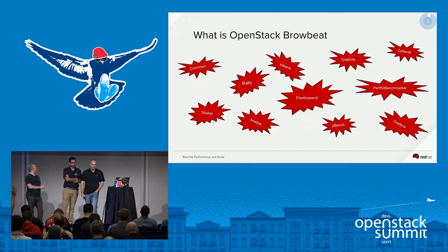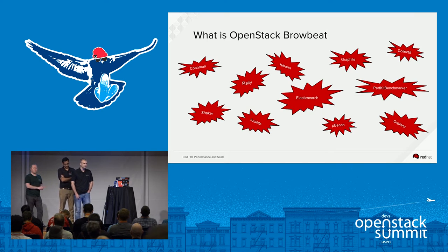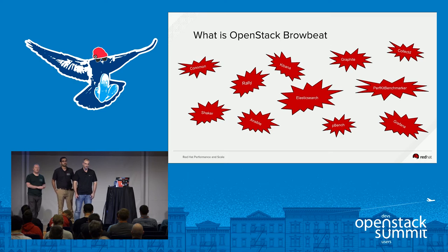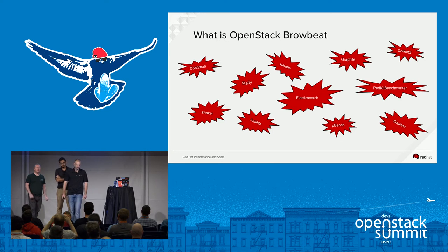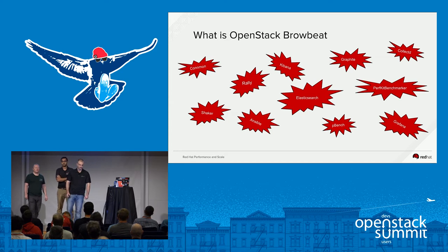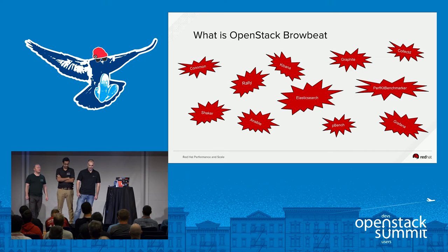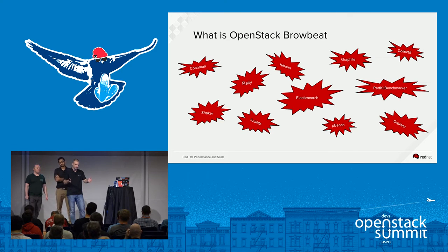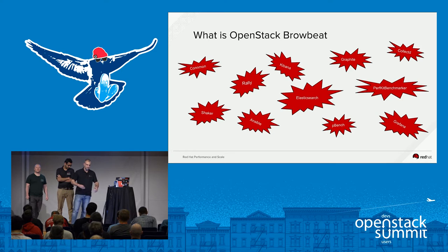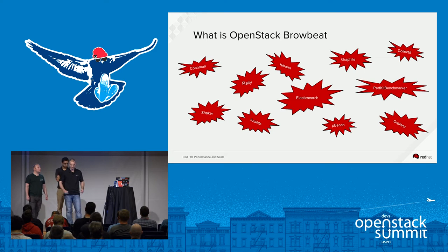So BrowBeat overview. What is OpenStack BrowBeat? It's a number of other open source projects all combined into a performance and scale analysis orchestration tool. You probably see familiar projects like Rally, Elasticsearch, PerfKit Benchmarker, Grafana, Collectd, and Graphite. One other thing to mention: anything that we find like a problem in any of this software, we'll open an issue or follow up, try to commit a patch in or help enhance that software as well. So the true spirit of open source.